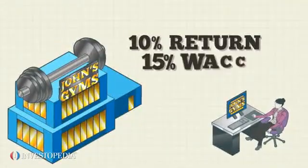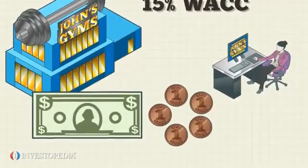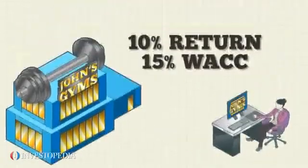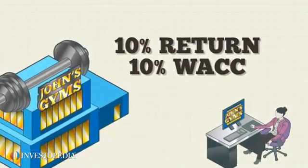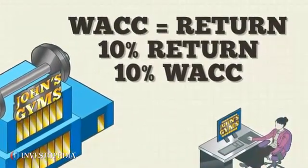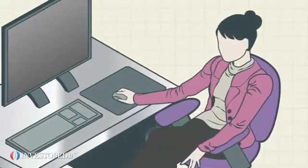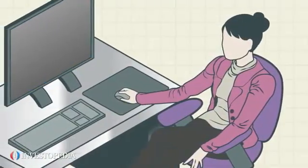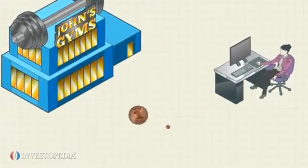If John's Gyms had a WACC of 15%, it would be destroying 5 cents of value for every dollar it invested. If its WACC were 10%, the company would be neither creating nor destroying value, but remaining stagnant. Mary thinks she might pass on this investment because, while the company is creating value, it is not creating as much as she would like to see.